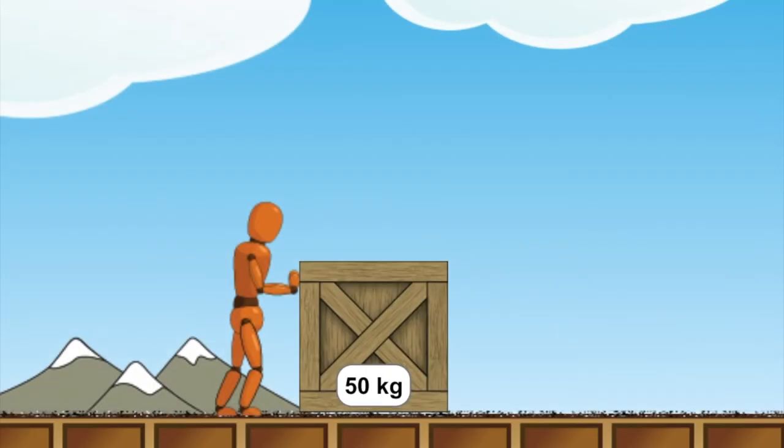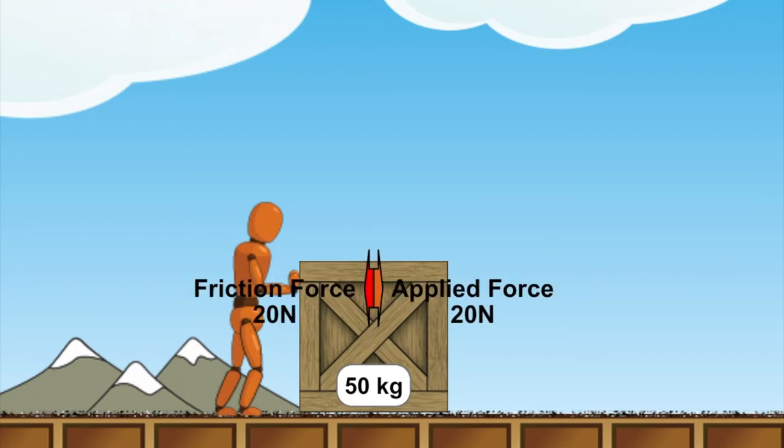Here is a person pushing a box of mass 50 kilograms initially with a force of 20 Newtons. The applied force is opposed by an equal and opposite force of friction. The two forces added together give a resultant of 0 Newtons. Here the friction is static and the box does not move.